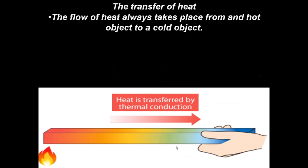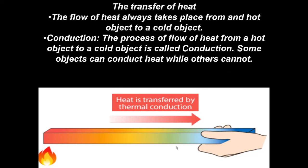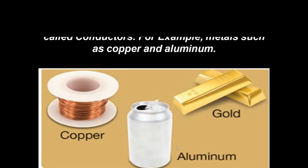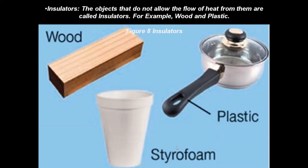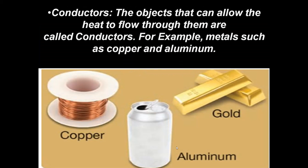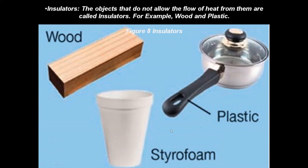Now let us learn what is meant by conduction. Conduction is a process of flow of heat from a hot object to a cold object. Some objects can conduct heat while others cannot. Objects that conduct heat are called good conductors, and objects that do not conduct heat are called insulators. Examples of conductors are copper, aluminium, and gold. Examples of insulators are wood, styrofoam, and plastic.